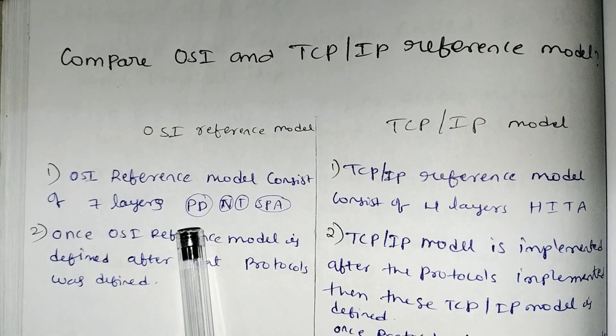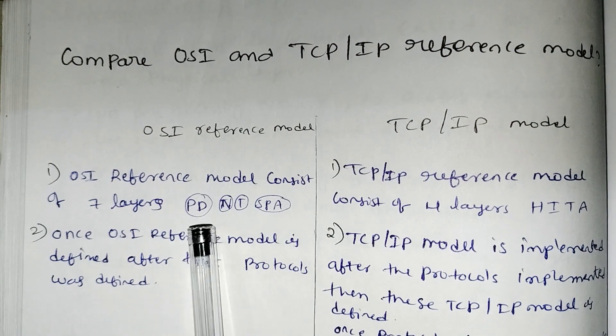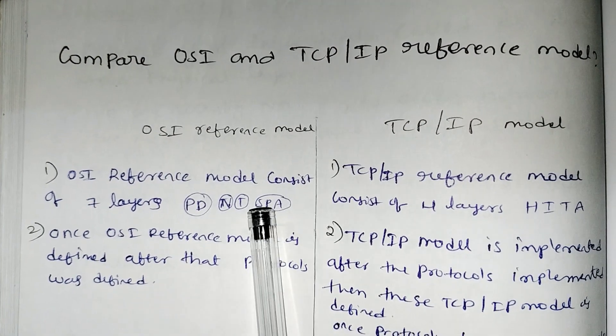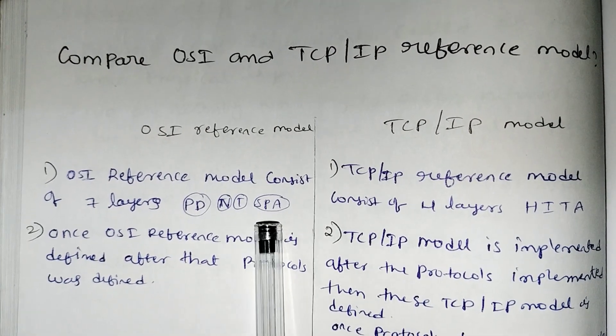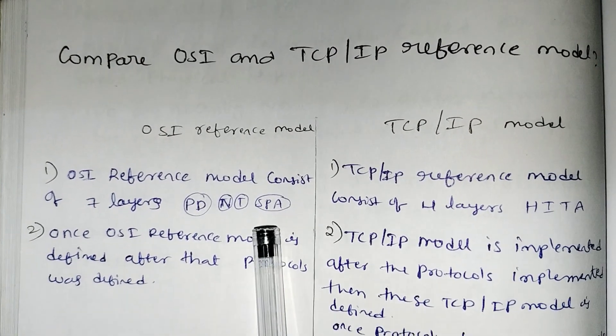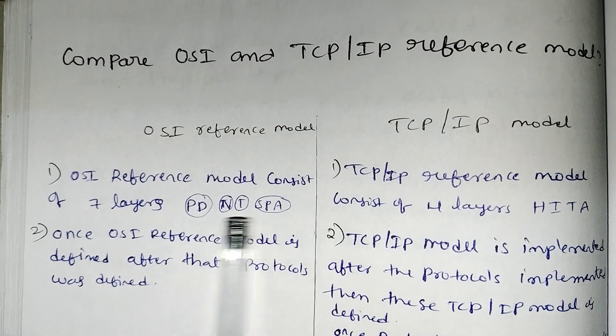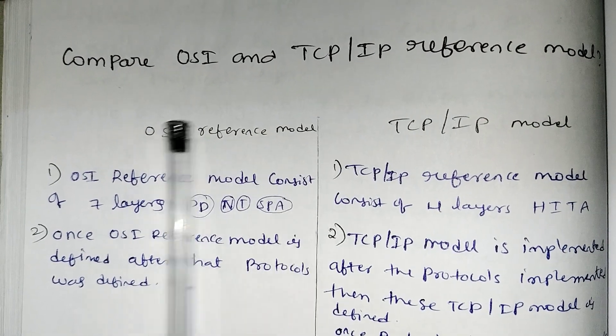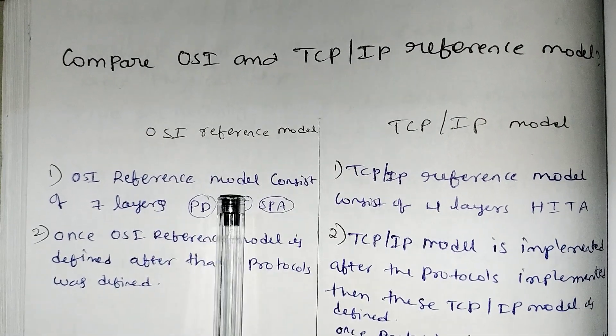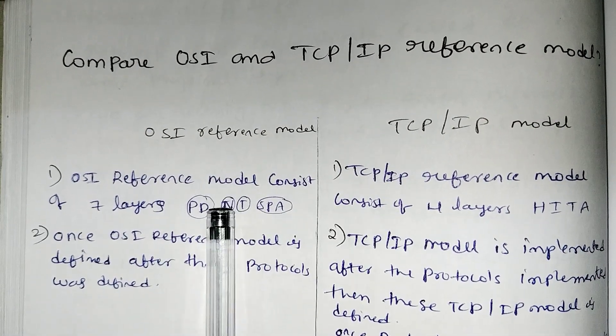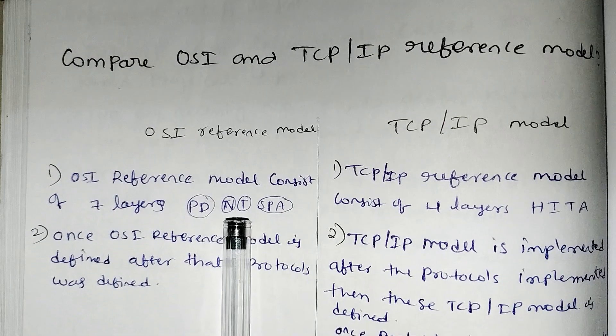The 7 layers of the OSI model are: Physical layer, Data Link layer, Network layer, Transport layer, Session layer, Presentation layer, and Application layer. These 7 layers make up the OSI model.